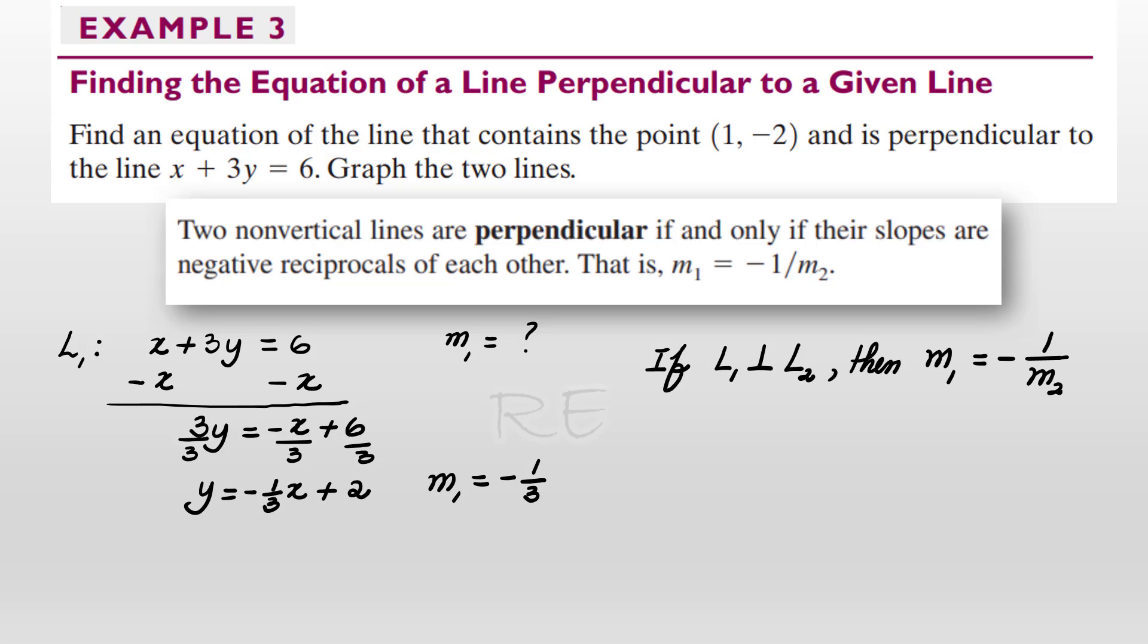Now, if L1 is perpendicular to L2, then M1 is equal to negative one over M2.